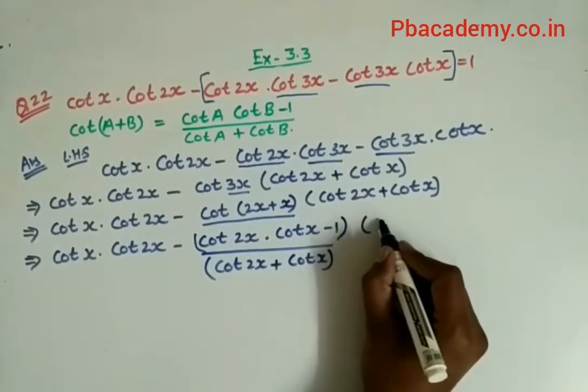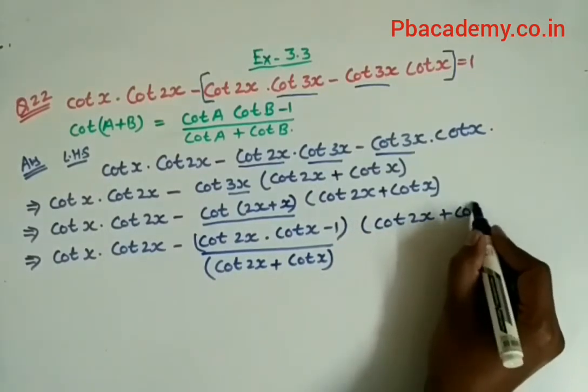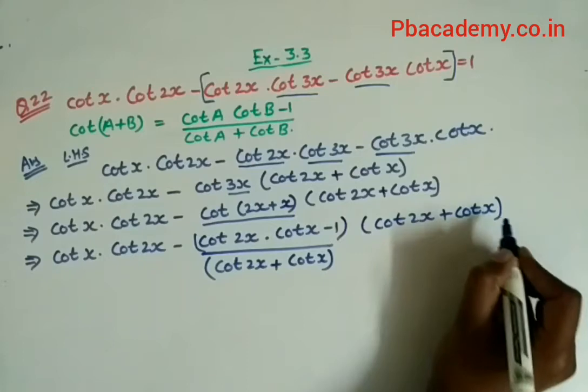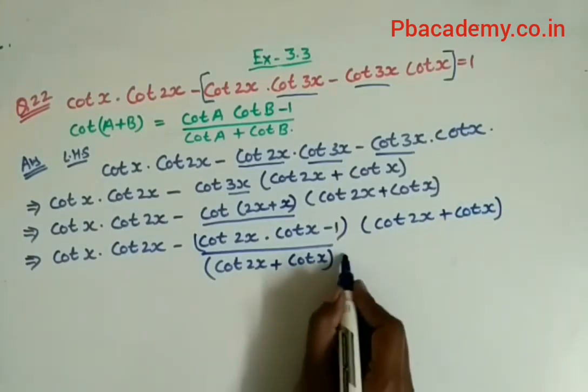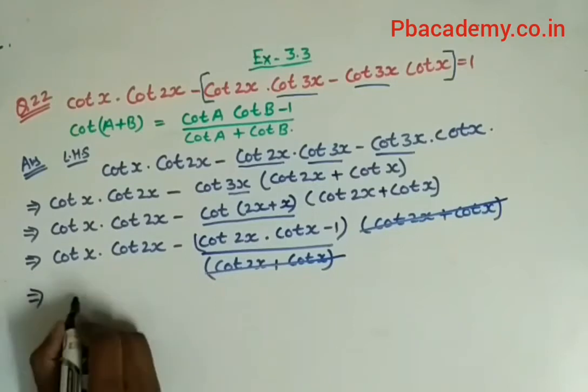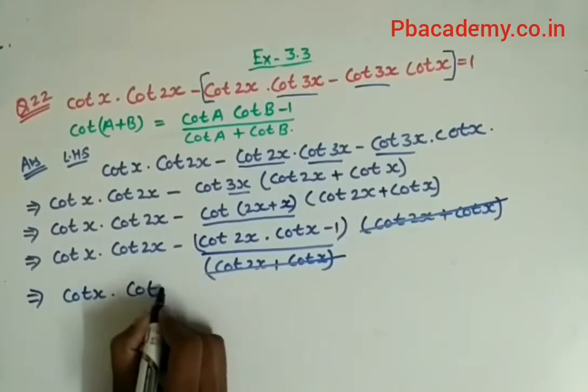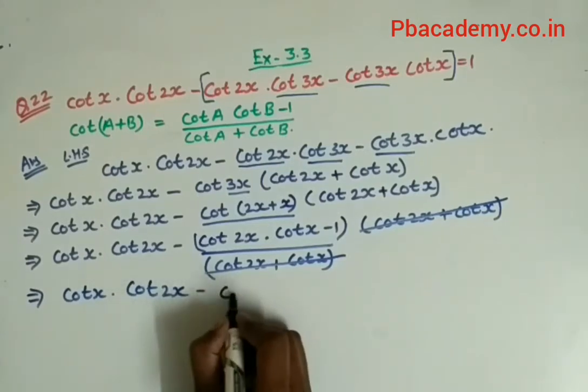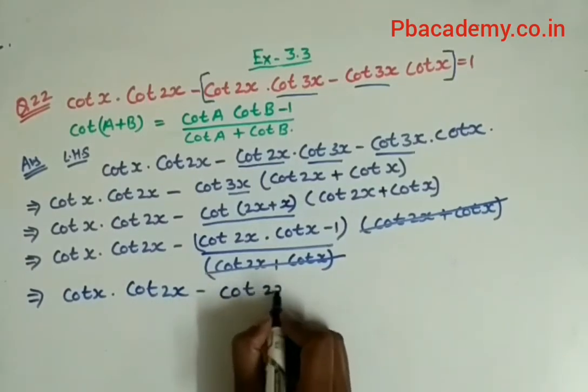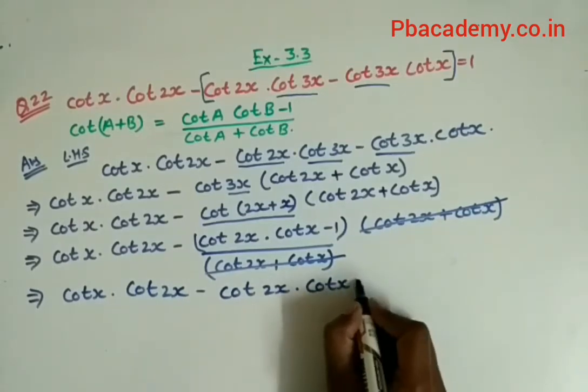This is being multiplied by (cot 2x + cot x). Now this whole thing will get cancelled, and the rest is cot x · cot 2x - cot 2x · cot x - 1.